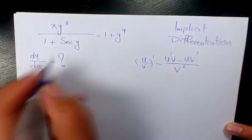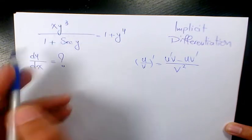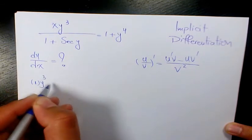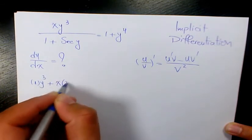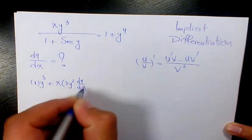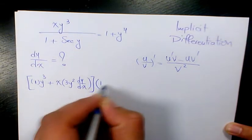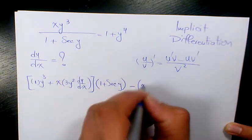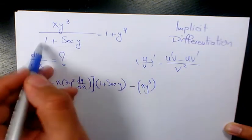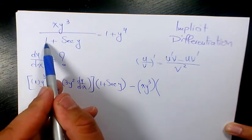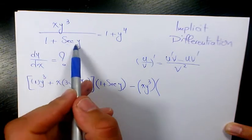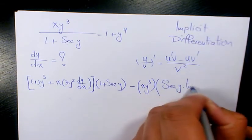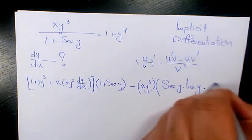So that's going to be the derivative of xy cubed, which is 1 times y cubed plus x times 3y squared dy over dx, times 1 plus secant y, minus u which is xy cubed times the derivative of 1 plus secant y. The derivative of 1 is 0, and the derivative of secant y is secant y tan y times dy over dx.